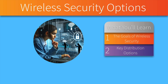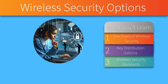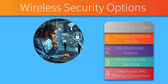Then we'll discuss a variety of wireless security standards such as WPA, WPA2, and WPA3, as well as some of the standards that came prior to WPA. And then we're going to wrap it up with a few additional ways that we can better protect a wireless network — things such as having guest access, MAC address filtering, requiring a user to go through a captive portal, and even geofencing.